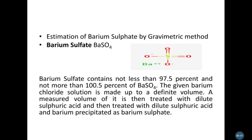For example, barium sulfate precipitation by gravimetric analysis is a very simple technique and may appear in your final exam for five to eight marks. The key expectation is the procedure, the mechanism, and the percentage of accuracy. Barium sulfate should contain 97.5% to not more than 100.5% barium sulfate after gravimetric analysis. Start by preparing a barium chloride solution in a defined volume, then treat it with dilute or concentrated sulfuric acid at 4N.